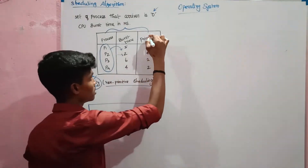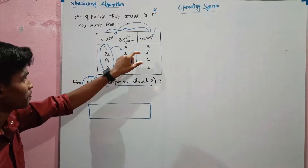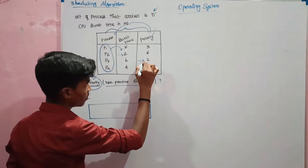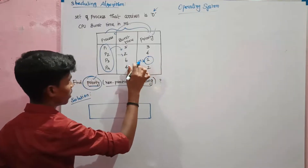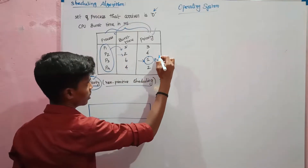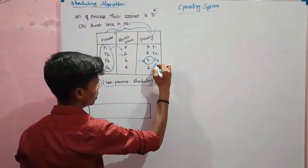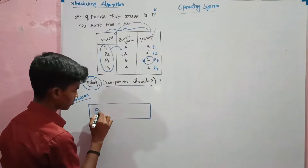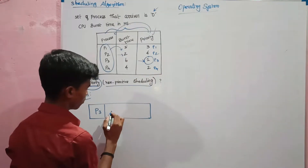Based on the priority, we have to find the process. For priority scheduling, we have to find the minimum value. The first minimum value — if we check, it's P3. Then the difference with P2, P3, and P4. So the minimum value is P3, the second minimum value is P4.